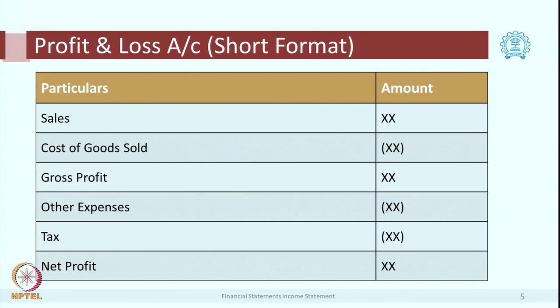This is a simple format or short form of P&L account. It starts with sales — most of the entity's income is from sales. Then, less cost of goods sold gives you gross profit. Then you deduct other expenses or operating expenses and taxes — that is the net profit. This is a very simple format of P&L.